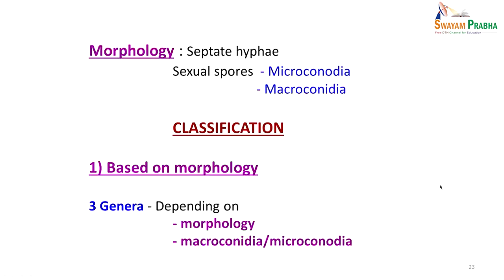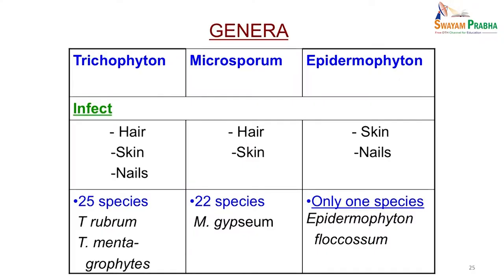Dermatophytes are a closely related group of filamentous fungi that infect only superficial keratinized tissue — skin, hair, and nails. They obtain nourishment from keratin, are potentially pathogenic to man and animals, and produce a variety of clinical conditions collectively known as dermatophytosis, tinea, or ringworm. Morphologically they are septate hyphae and produce asexual spores — microconidia or macroconidia. Classification based on morphology identifies three genera: Trichophyton, Microsporum, and Epidermophyton. Trichophyton infects hair, skin, and nails; Microsporum infects hair and skin; Epidermophyton infects skin and nails.